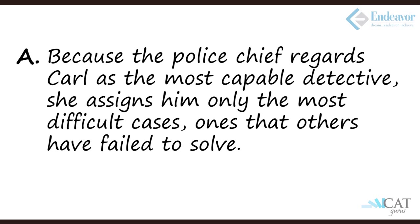The first option: the police chief regards Carl as the most capable detective and assigns him only the most difficult cases — ones that others have failed to solve. The given fact is that he solves one out of 25 and we are saying he is incompetent. The author wants us to go against that statement. If we have to prove he is competent, this first option tells us the most difficult cases — the ones others cannot solve — reach him. He is still able to solve one out of 25, which makes him competent. That is an example of weakening the argument.